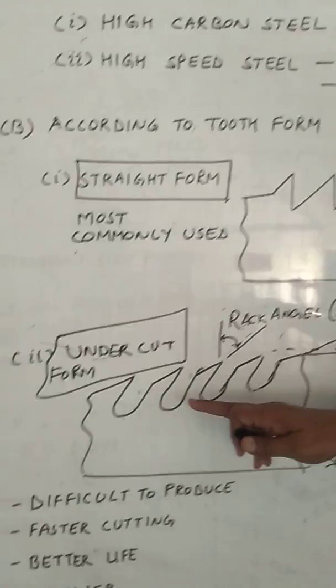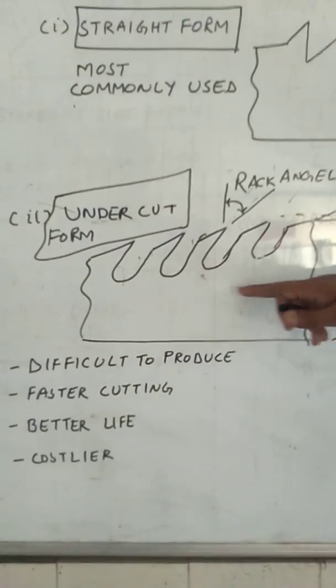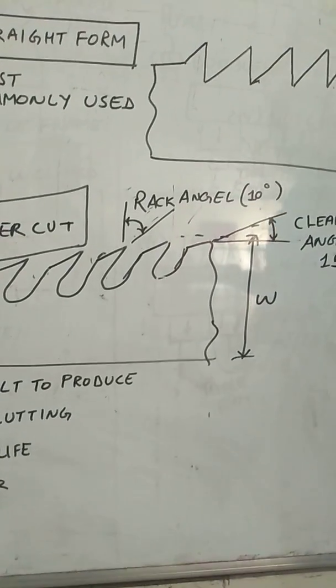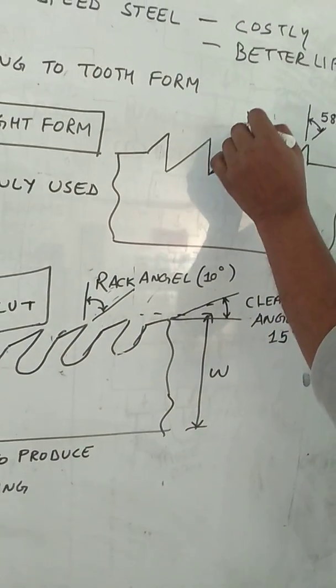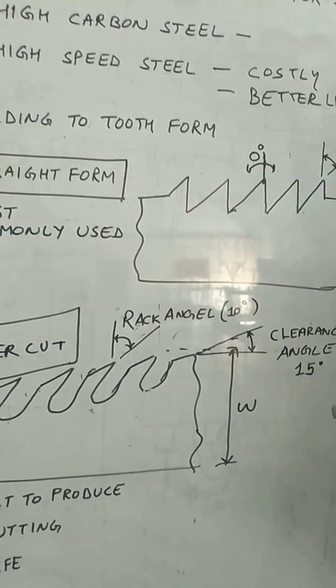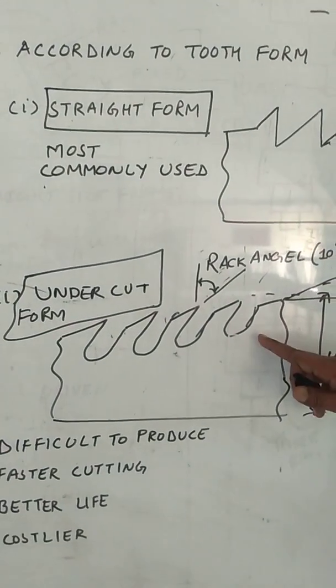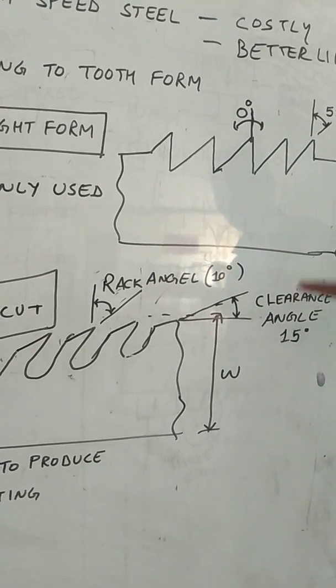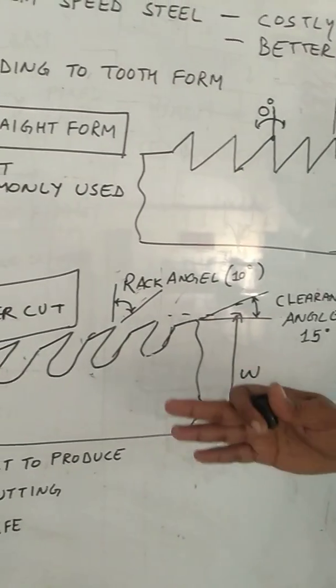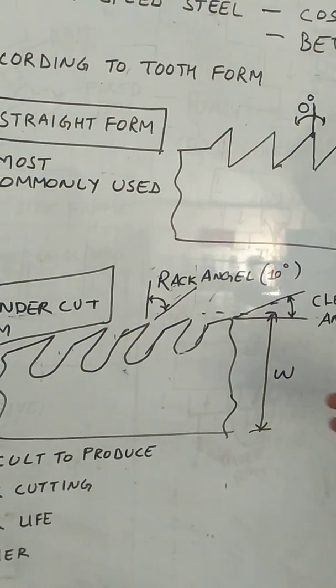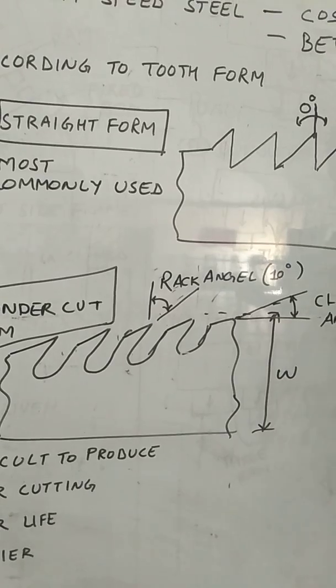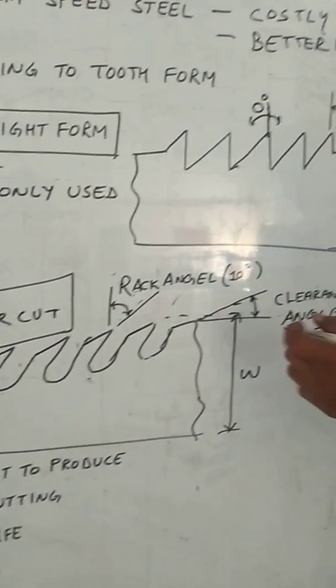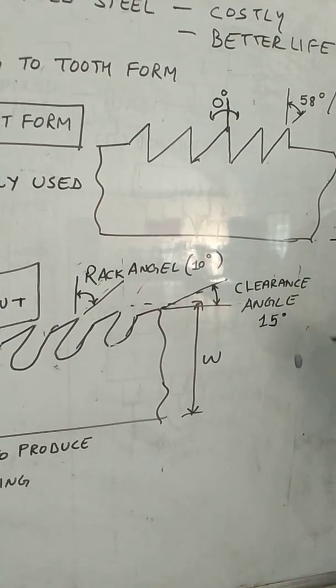While in second category, it is an undercut form, where rack angle is given. Here the rack angle is not given, rack angle is zero. So the benefit of this rack angle is it is giving a better life. And also when you cut the material, the cutting operation is quite smooth as well as it cuts more material from the workpiece. And also there is 15 degree of clearance angle is given.